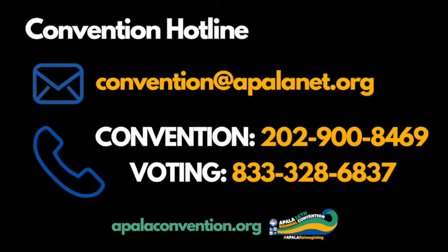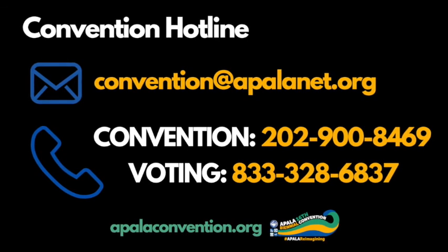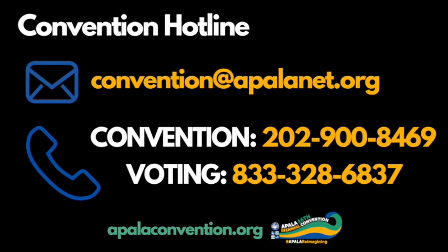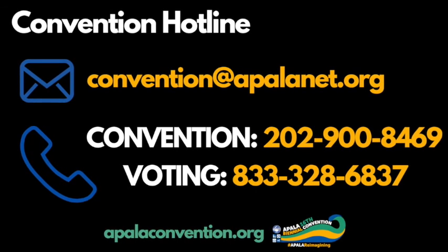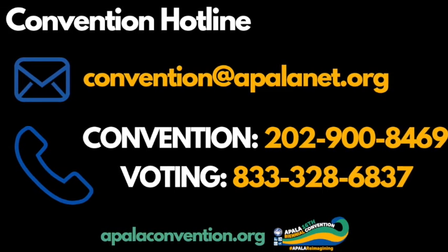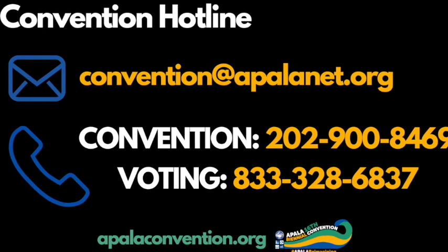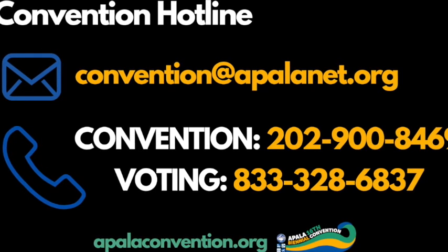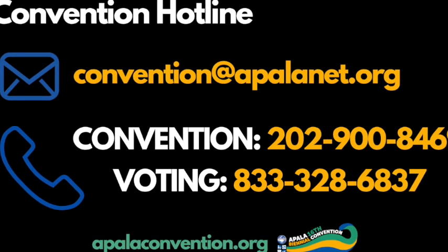This concludes our convention tech orientation. Thank you so much for being part of convention with us. Most importantly, remember that the convention hotline is here for you. If you need anything, please email us at convention@apalanet.org and call 202-900-8469. The voting convention hotline is 833-328-6837 — this number is only for Election Buddy-related voting questions. You can also visit us at apalaconvention.org for information about the agenda, caucuses, or instructions on how to vote and participate in convention. Have a happy convention!